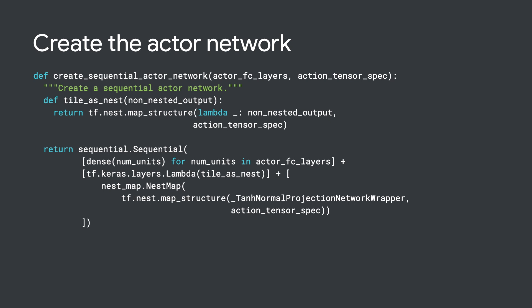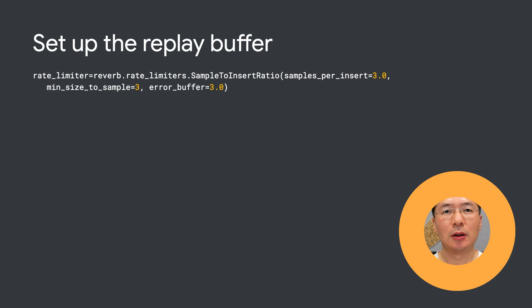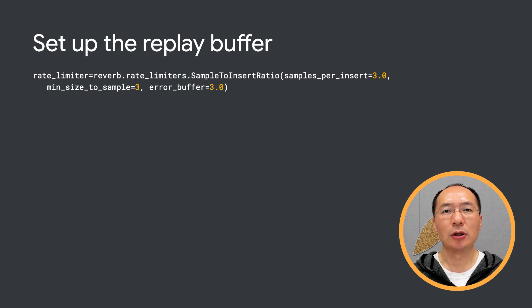Next, we instantiate the SAC agent using the actor and critic network, plus a number of other parameters. We're still going to use the Reverb replay buffer here, but we're going to use the rate limiter to enforce conditions on when items can be inserted or sampled from a table. Here we are using a sample-to-insert ratio, which sets the average ratio of inserts to samples by blocking insert and sample requests. This is useful for controlling the number of times each item is sampled before being removed — it's a hyperparameter you should tune for better performance.